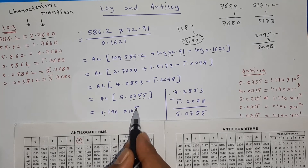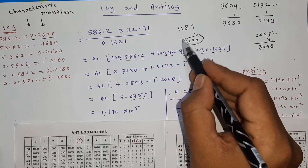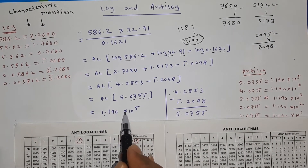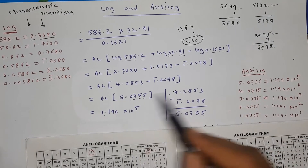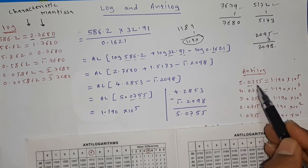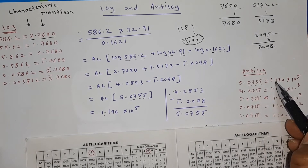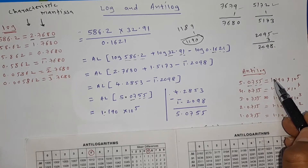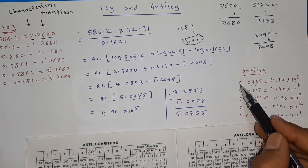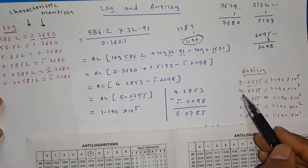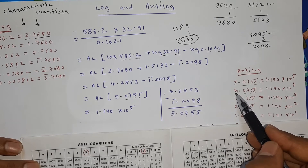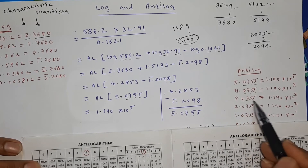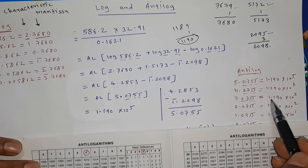There are two ways to express this — remember only one standard way: whatever number you get from the anti-log table, put the decimal after the first digit and multiply by 10 raised to the characteristic. So 1190 becomes 1.190, and the characteristic was 5, giving 1.190 × 10⁵. Students, always remember: put decimal after one digit, then write into 10 raised to the characteristic number.